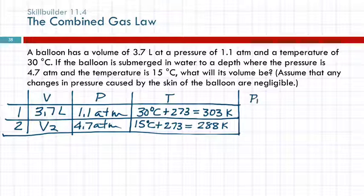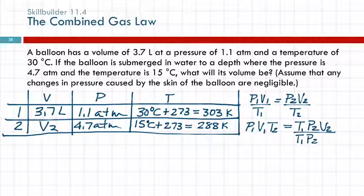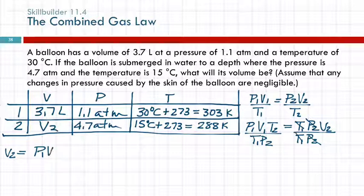And again, we're going to use the combined gas law. P1V1 over T1 equals P2V2 over T2. Cross-multiply to get rid of the fraction. I need to solve for V2. I'm going to divide both sides by T1 and P2. I do that because the T1s cancel out and the P2s cancel out. V2 equals P1V1T2 over T1P2.